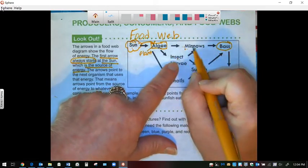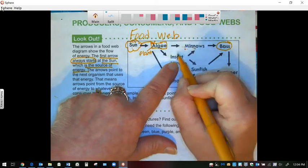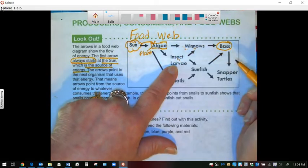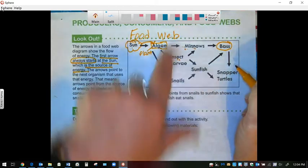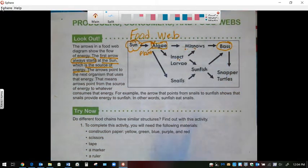So if the minnow ate the insect, then the bass got the energy from the minnow, the insect, and the algae. We can follow the food chain to see how animals get energy from each other.